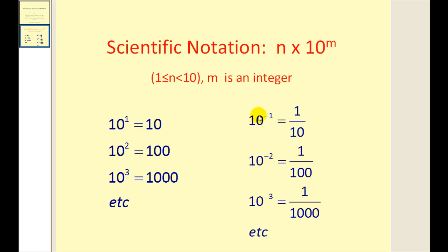However, when we multiply n times ten to a negative power of ten, the number is actually going to get smaller, because remember that ten to the negative one is the same as one over ten to the first, or one tenth.